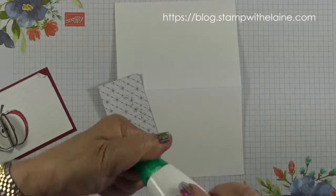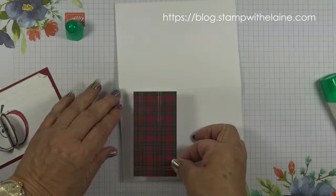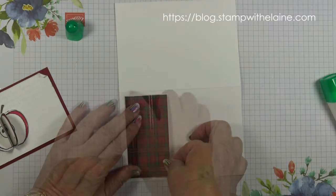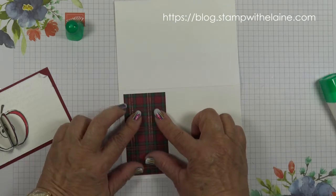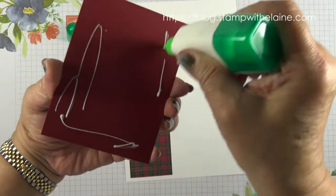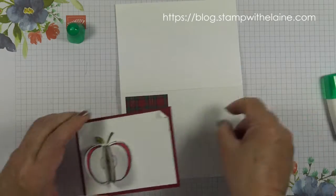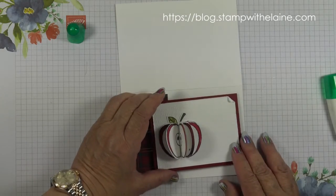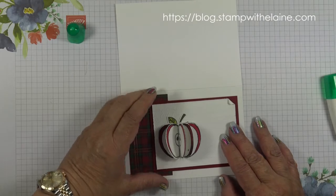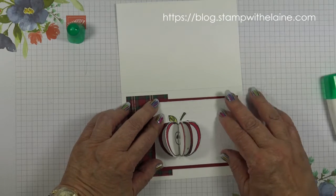Next I'm going to adhere the designer series paper. I can't remember what it's called. Wrapped in plaid. Leaving an even border on these three sides. And then I can assemble this piece and glue that. And then leave a border same as the opposite side. Like so.